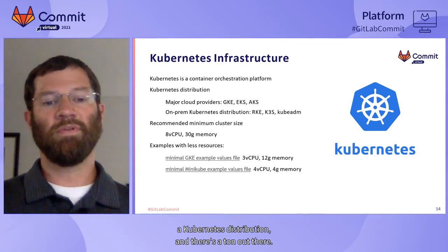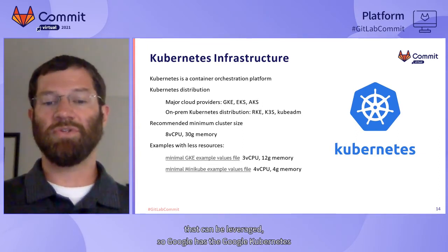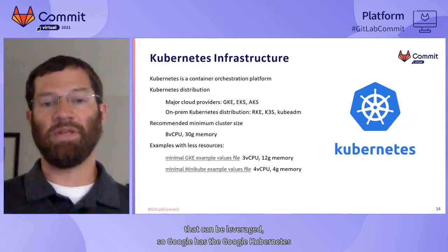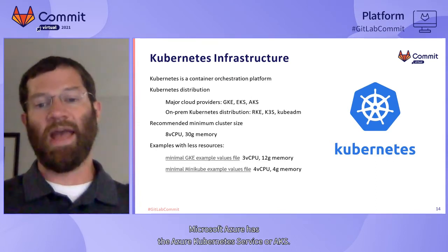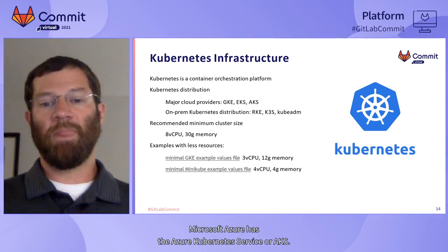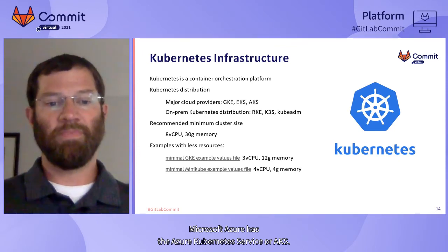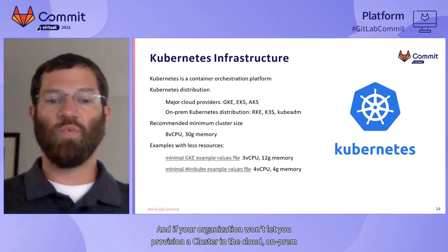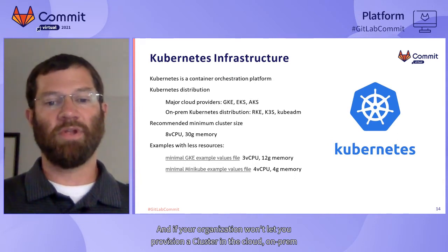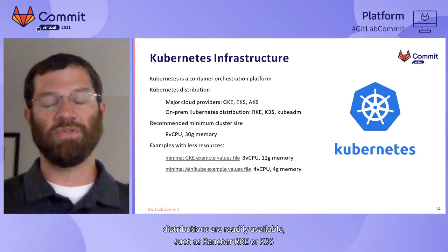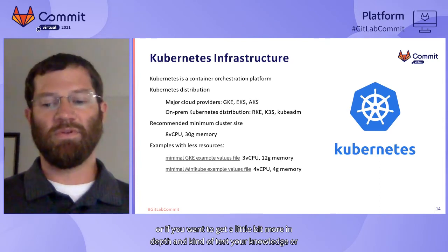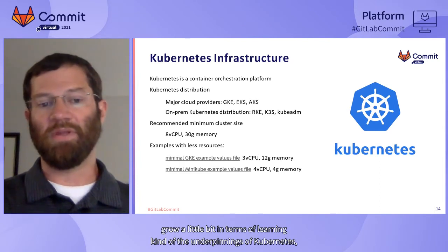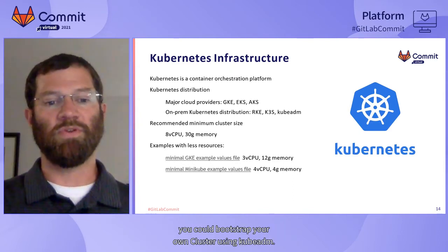Major cloud providers have implementations that can be leveraged: Google has GKE, Amazon has EKS, and Microsoft Azure has AKS. If your organization won't let you provision a cluster in the cloud, on-prem distributions are readily available such as Rancher RKE or K3S. Or if you want to get more in-depth and grow your knowledge of the underpinnings of Kubernetes, you could bootstrap your own cluster using kubeadm.